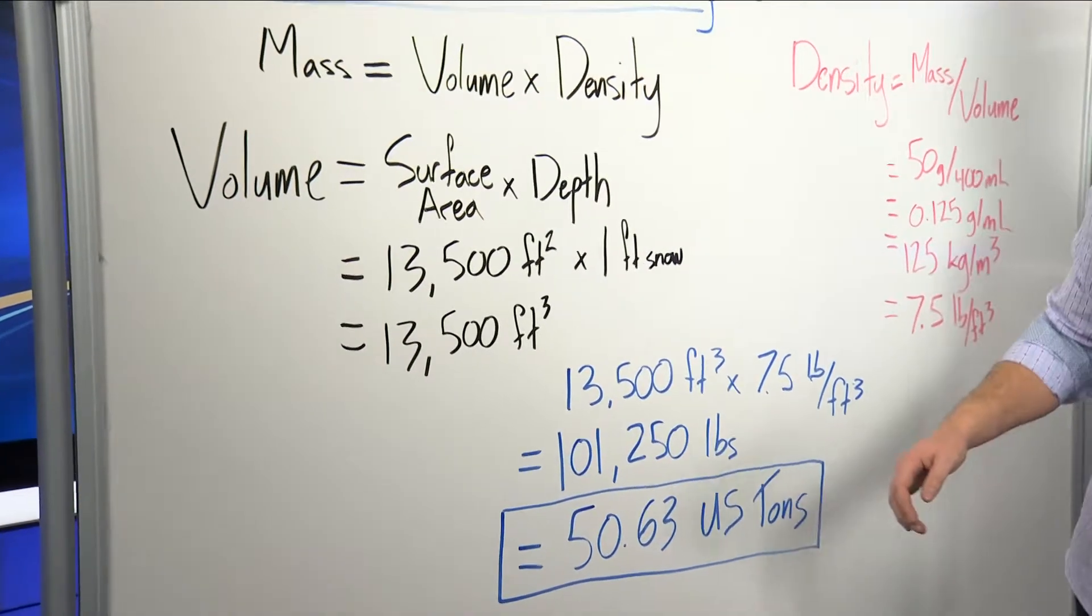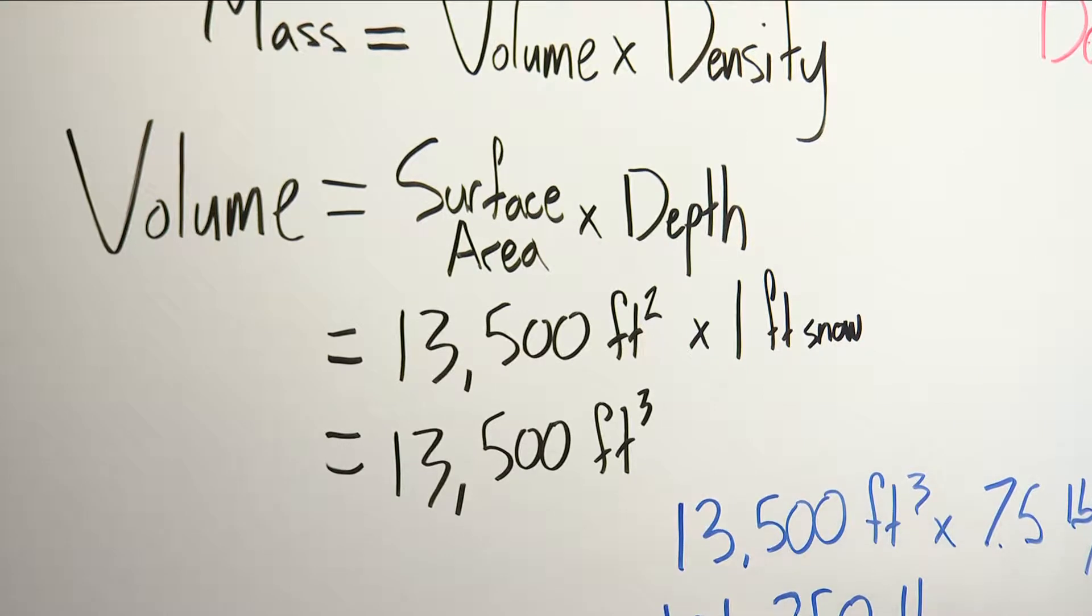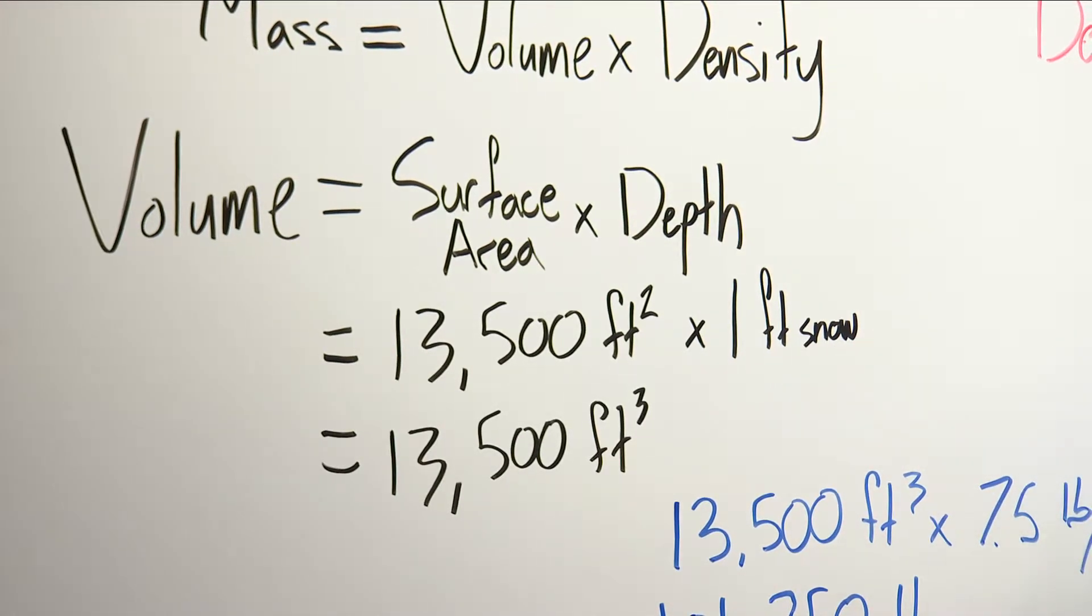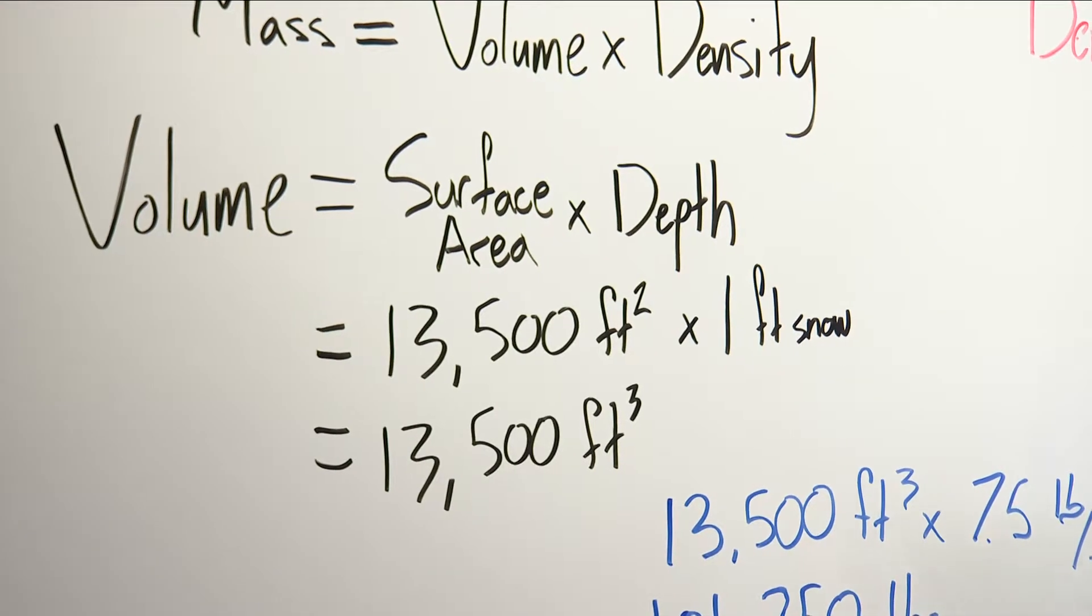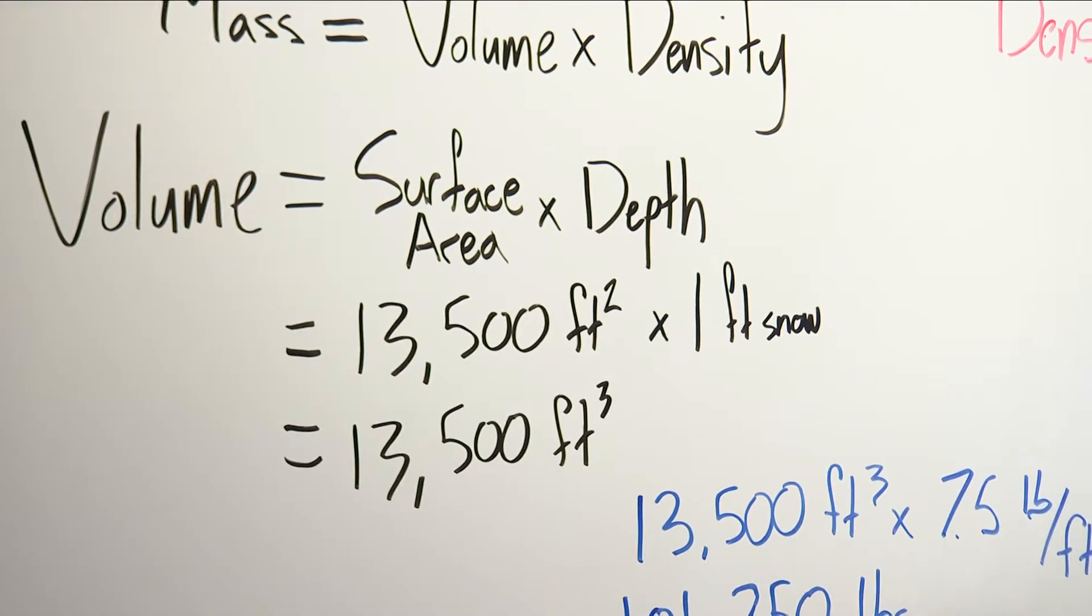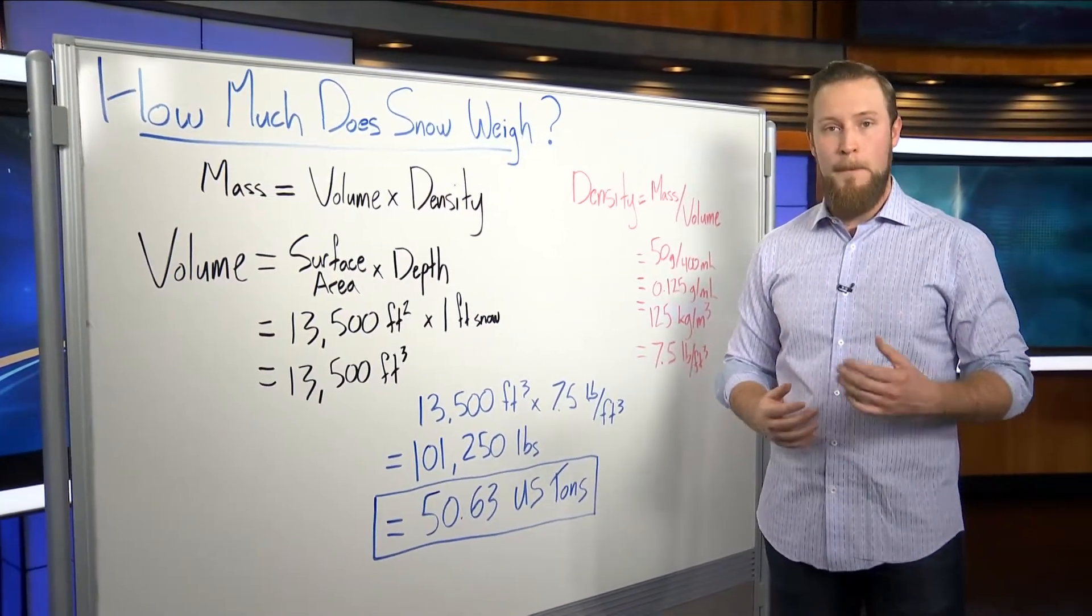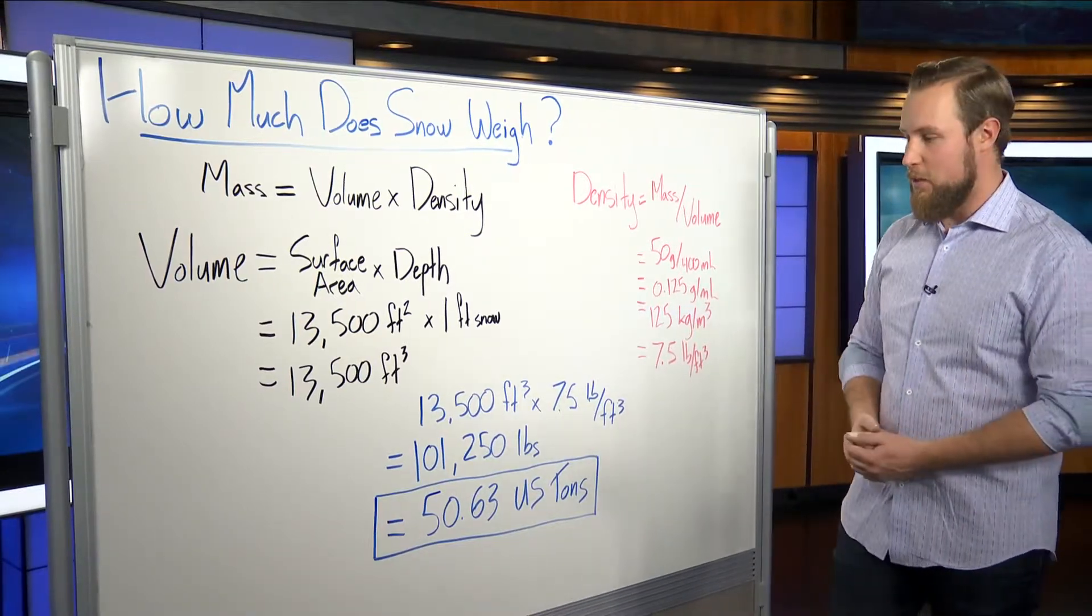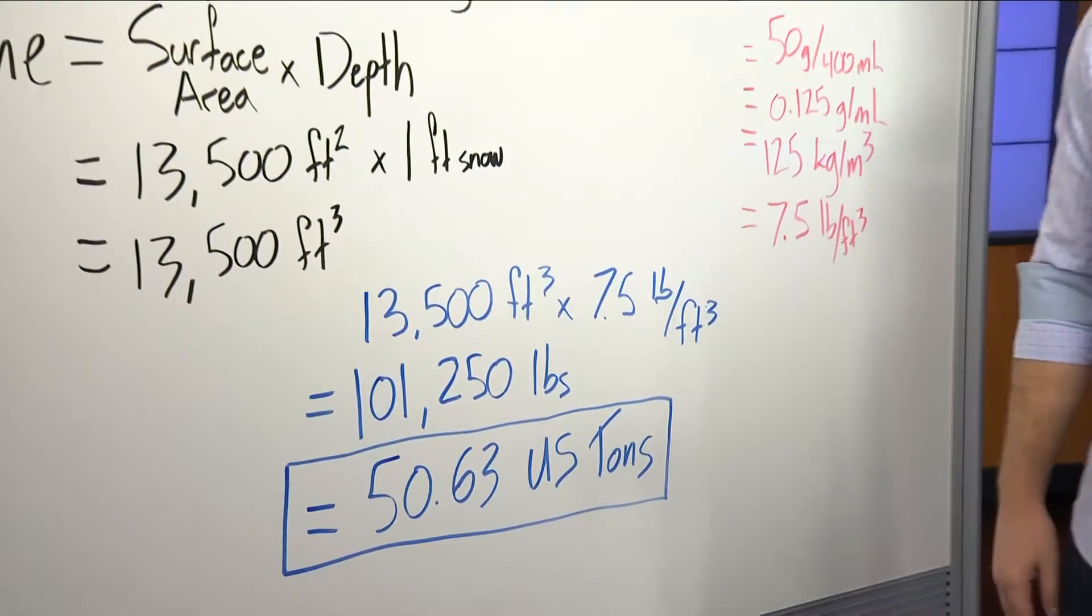The dimensions of our building leave us with 13,500 square feet of roof surface area on our building here at KTVQ. I used one foot of snow to multiply for depth. The official measurement for snow depth out there right now at the airport is 11 inches, but depending on where you are, somewhere between 11 to maybe even up to 15 inches is certainly possible. So I took that one foot for simplicity's sake in doing the math. That leaves us with 13,500 cubic feet of volume.